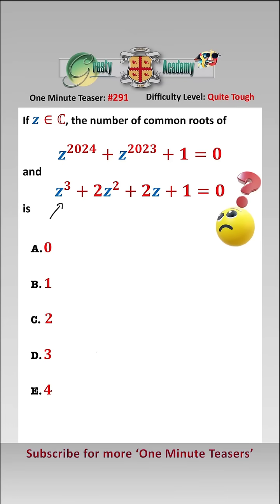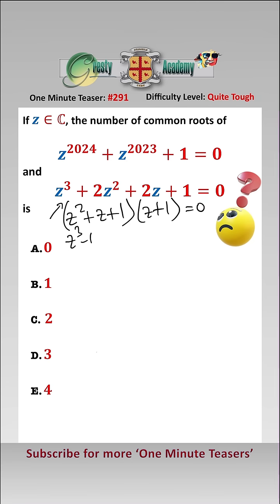It's well worth remembering that this equation here can be rewritten as z squared plus z plus 1 times z plus 1 equals 0. Furthermore, it's worth remembering that z cubed minus 1 is equal to z squared plus z plus 1 times z minus 1.